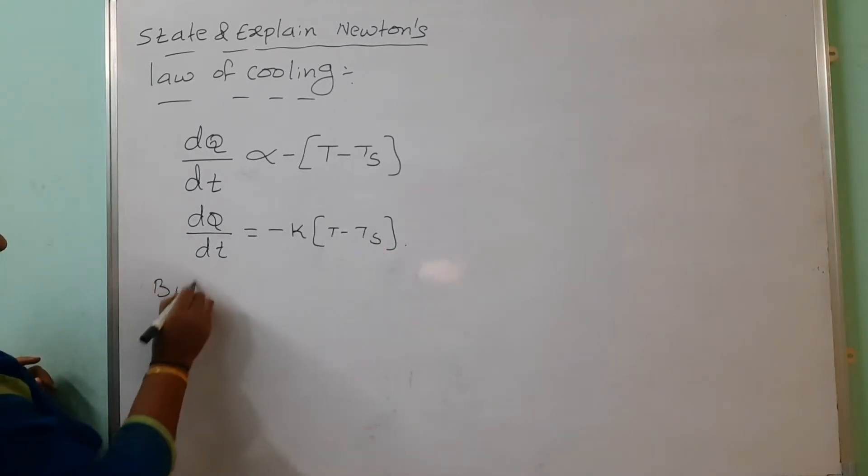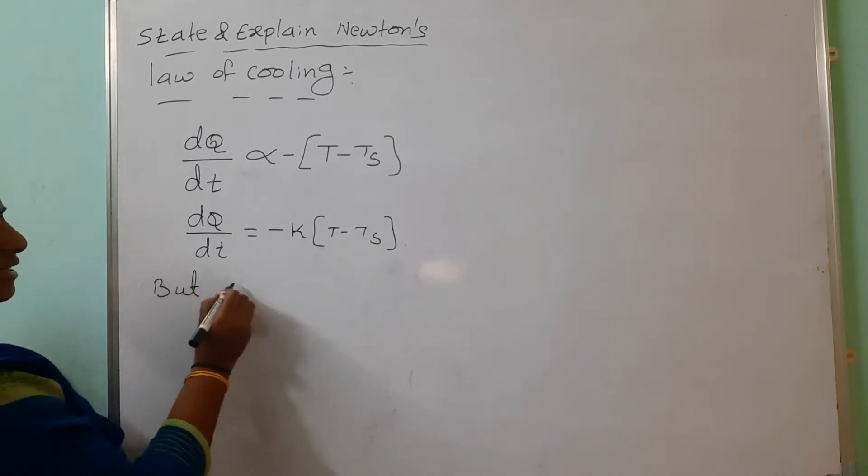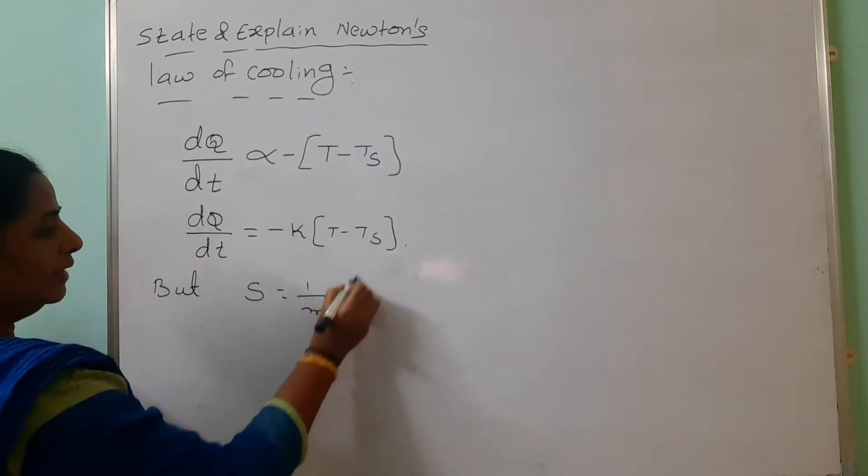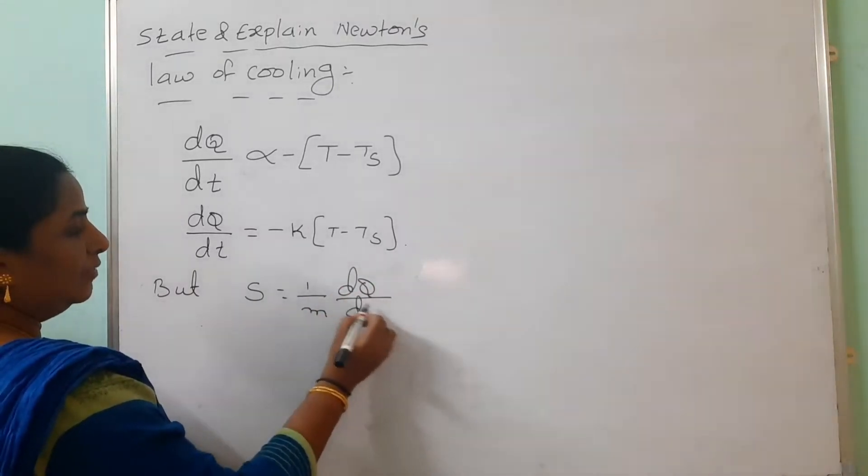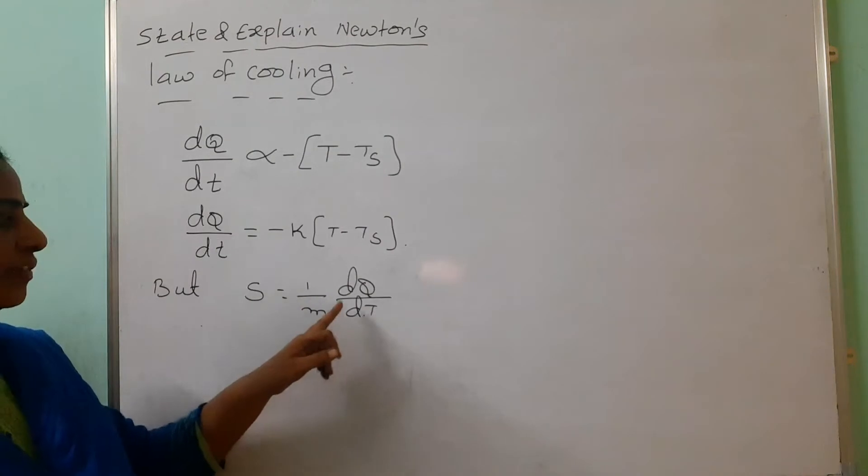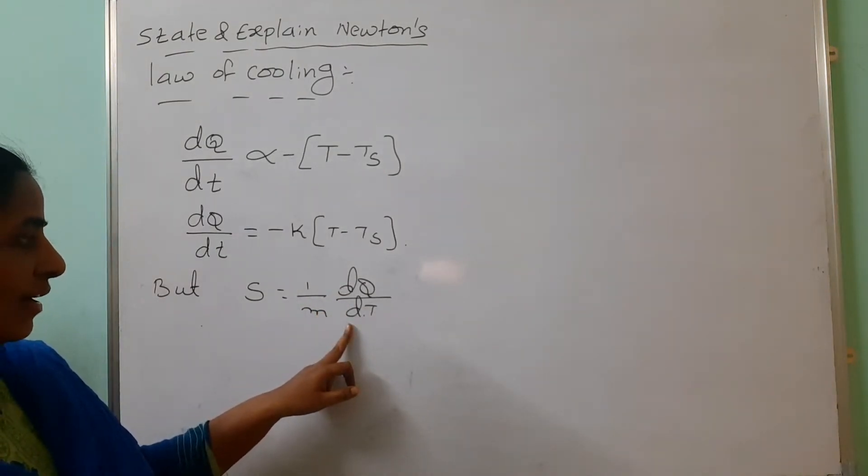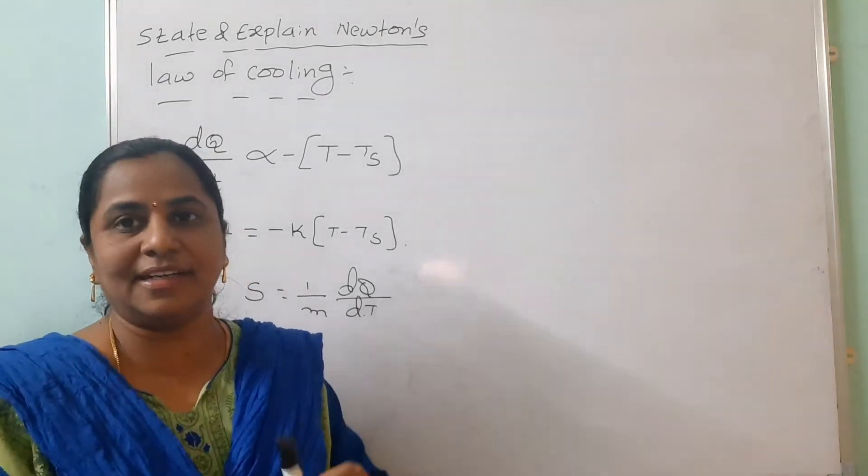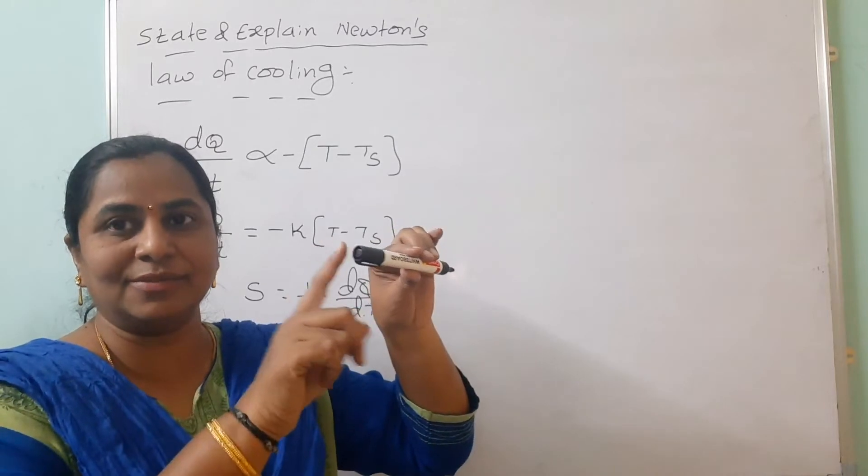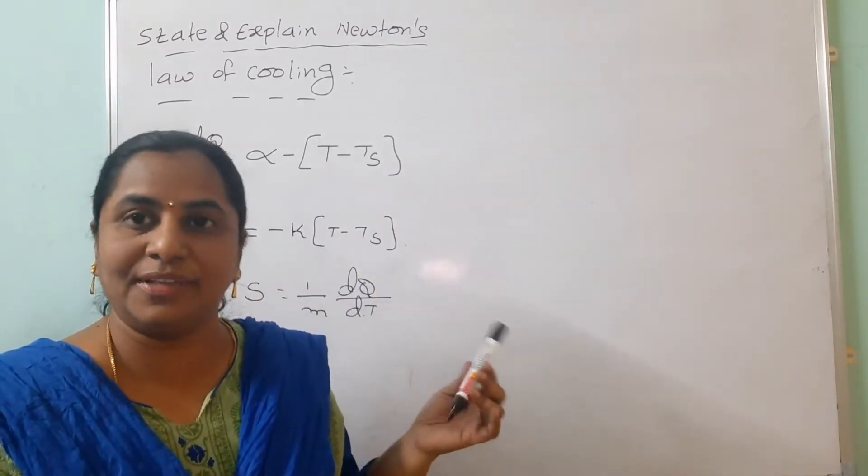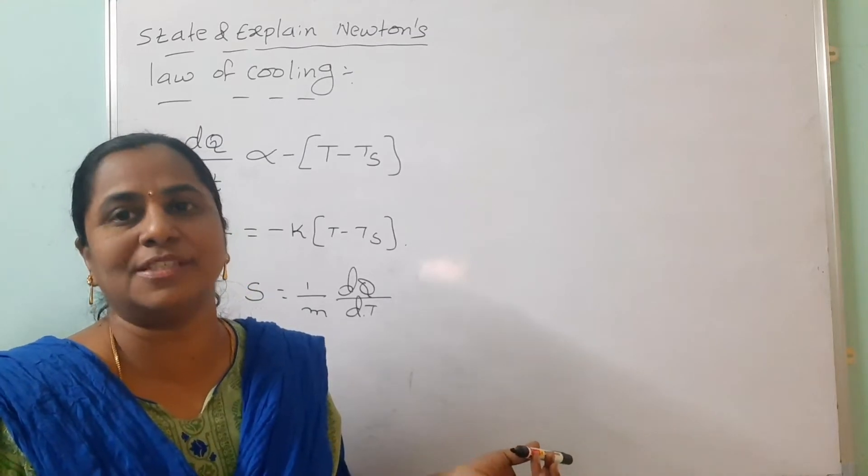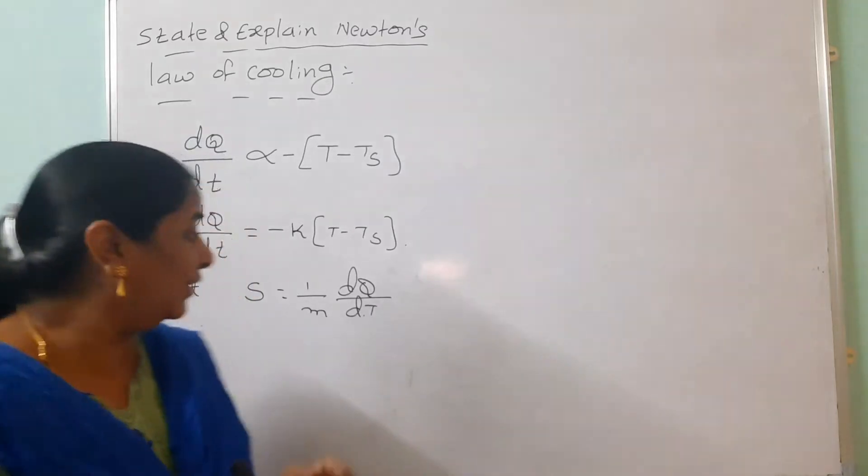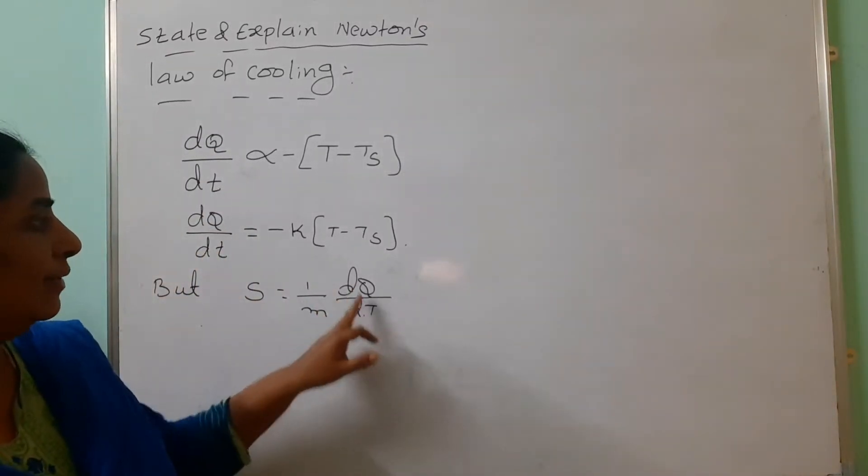But from the specific heat we know that what is the specific heat formula? Specific heat equals to 1 by M into DQ by DT. The amount of heat energy required to raise the temperature of 1 unit of mass of the body through 1 degree centigrade. Different materials are having different values of the specific heat.